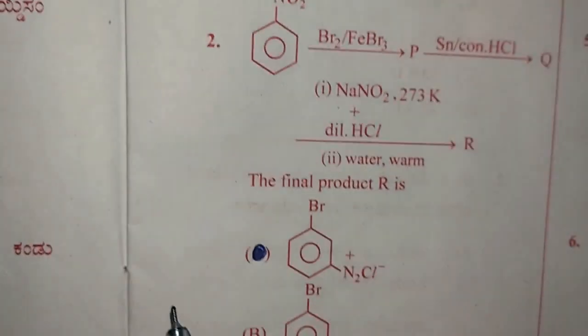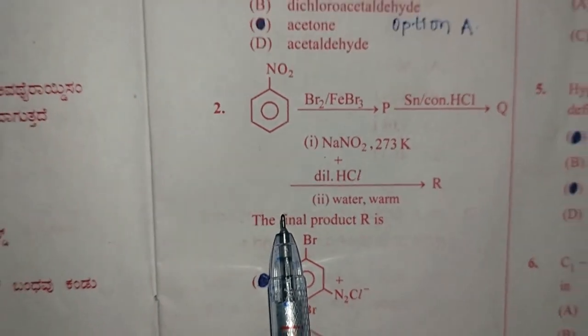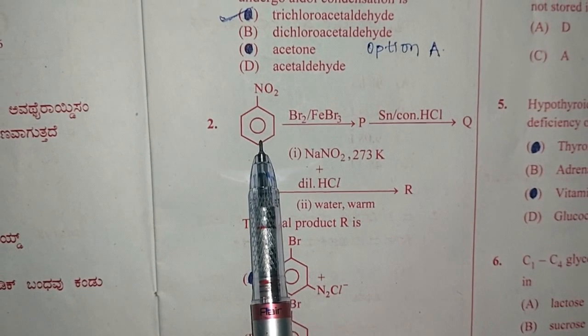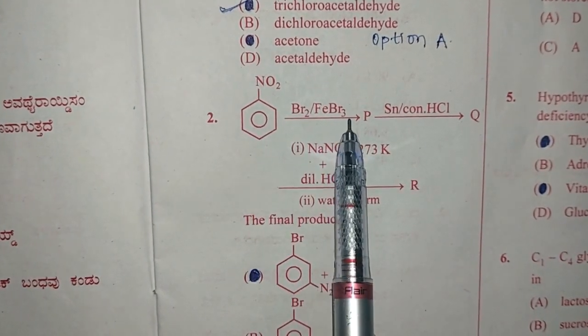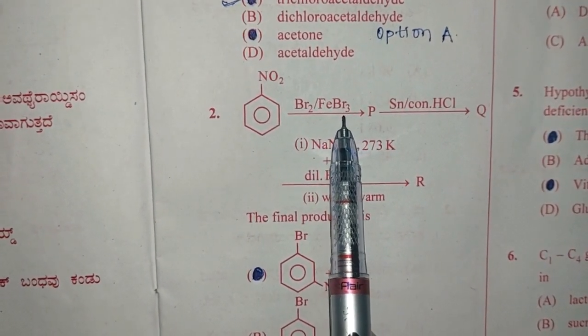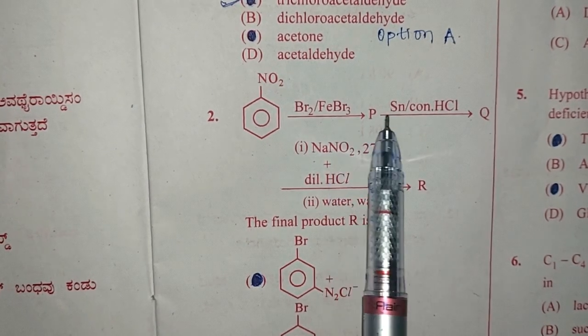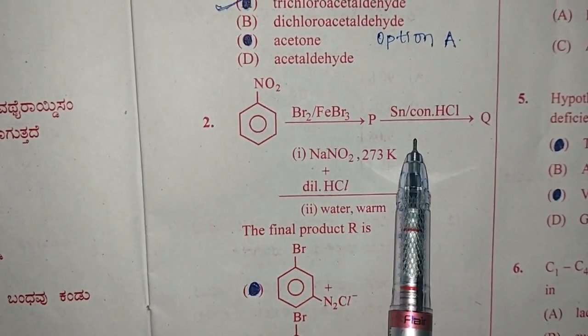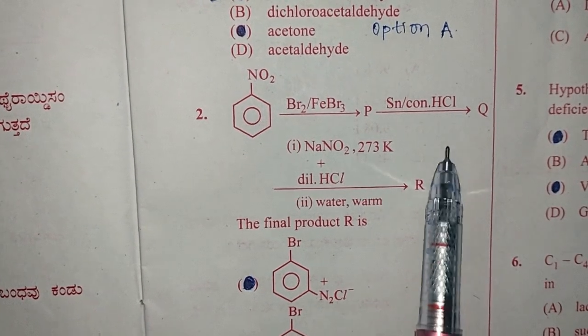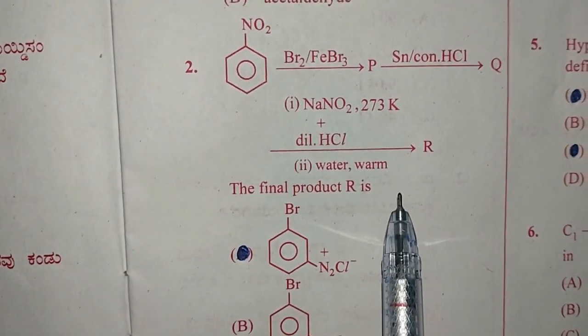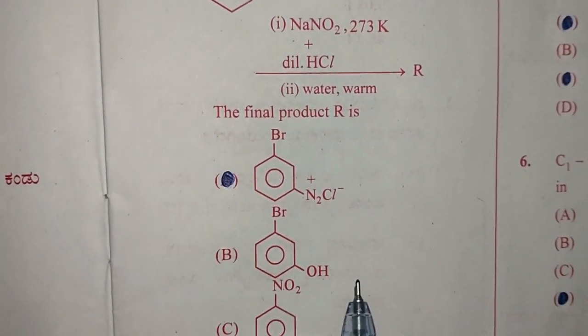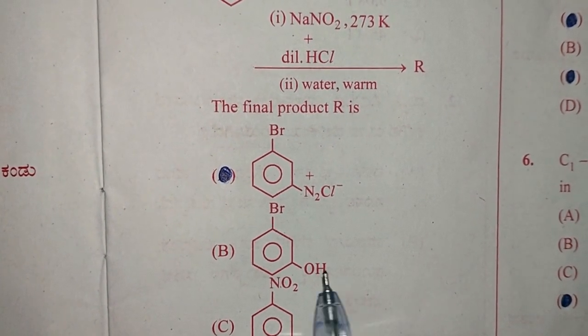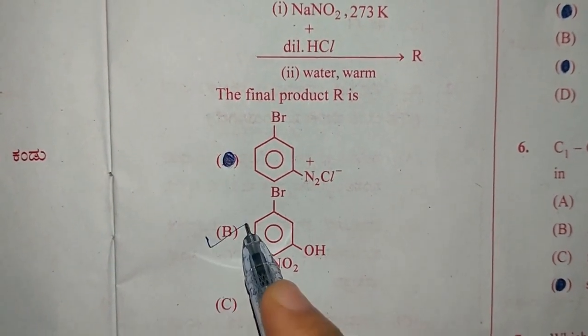In the second question, you can see that nitrobenzene reacts with bromine in the presence of ferric bromide, we get P. P reacts with tin in the presence of concentrated HCl, we get Q. And Q when treated with NaNO2 with dilute HCl and then with warm water, we get R. The product obtained is option B.